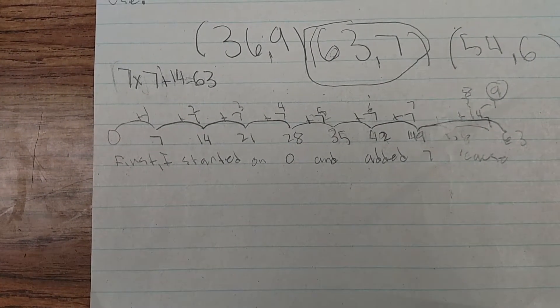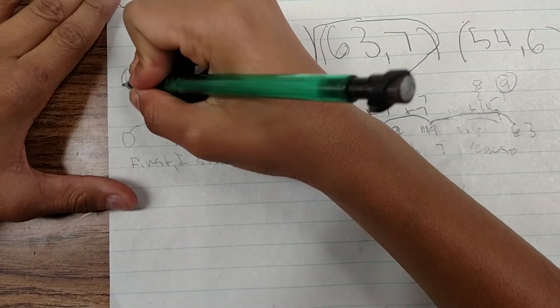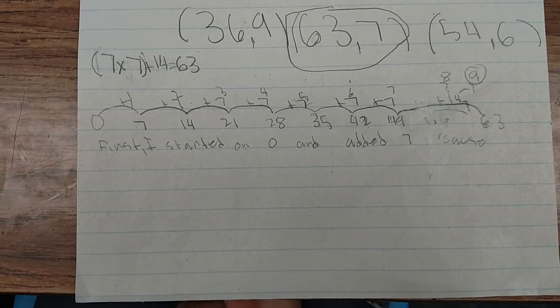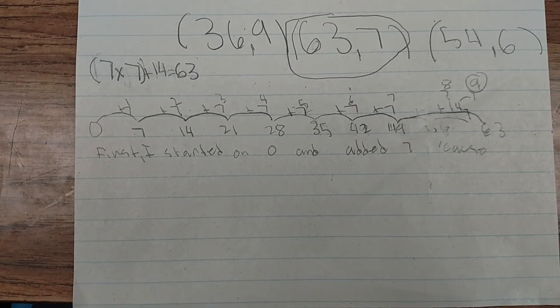Okay. So you're going to need to put parentheses around the 7 groups of 7. Alright. Does that match your number line? Yeah. Okay. Thank you.